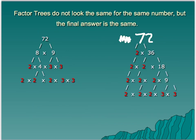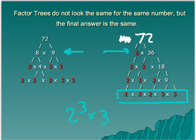Factor trees don't always look the same for the same number, but the final answer is the same. We might have chosen different things to begin with — on one of these, on the left, we had chosen 8 times 9 to begin with. We continue to break them down, and all those numbers in red are the primes. So we end up with that prime factorization of 2 cubed times 3 squared again. When doing prime factorization, we use those exponents, starting with the smallest base and going to the bigger one.